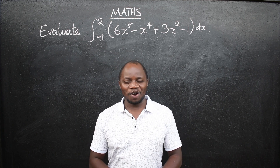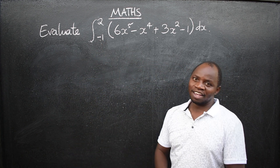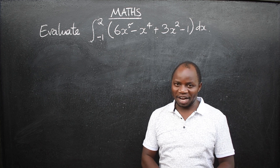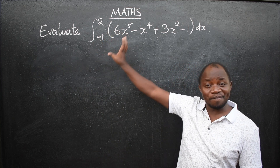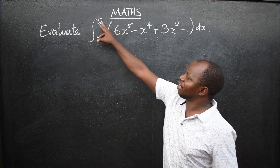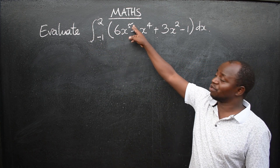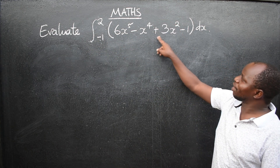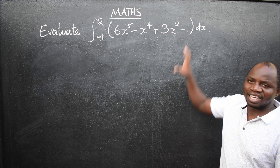Greetings, students. We have a question here on the board that we need to work out. This is mathematics. We need to evaluate the integral of 6x to the power 5 minus x to the power 4 plus 3x squared minus 1, dx.